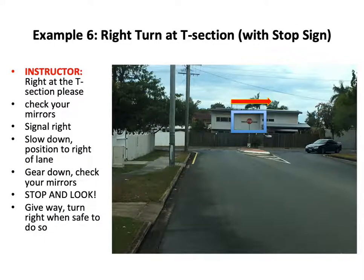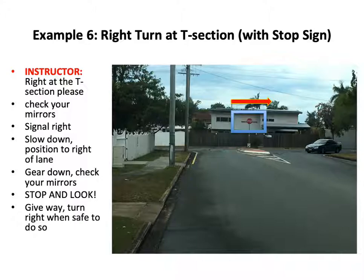Example six: right turn at T section with stop sign. Right turn at the T section, please. Check your mirrors, signal right, slow down, position to the right of the lane, gear down, check your mirrors, stop and look, give way, turn right when safe to do so.